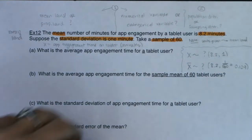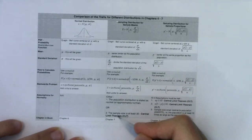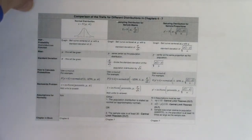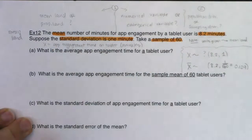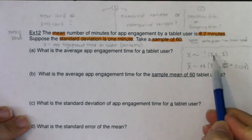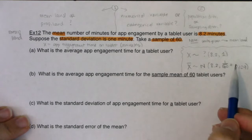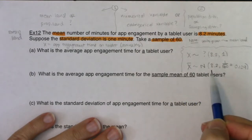Now, can I indicate normality for the sampling distribution? In mean land, only one of two things has to happen: was the population distribution stated as normal or approximately normal? No. Was the sample size at least 30 so the central limit theorem kicked in? Our sample size was 60, which is at least 30, so I can indicate normality. We know the shape, center, and standard error for the sampling distribution, so we can use normal CDF there.